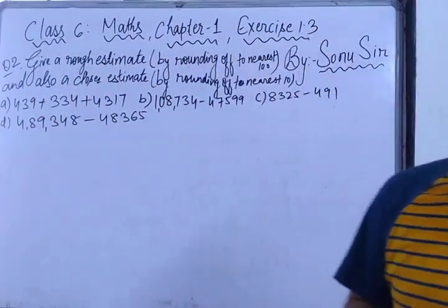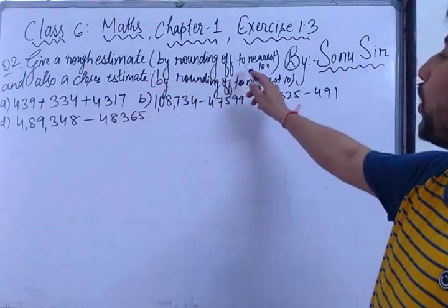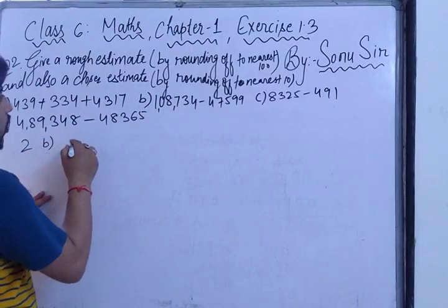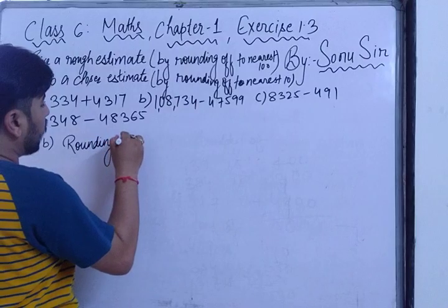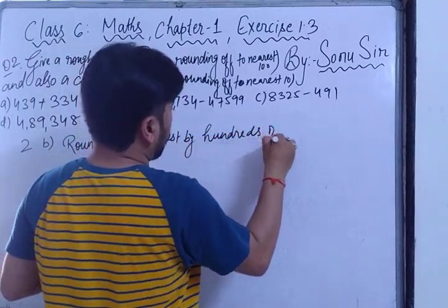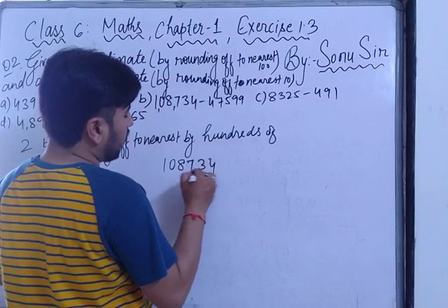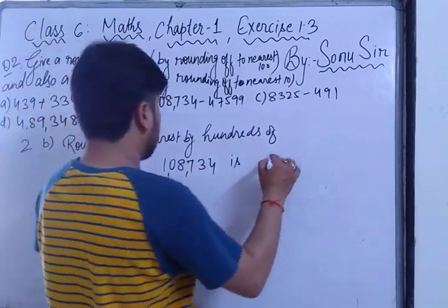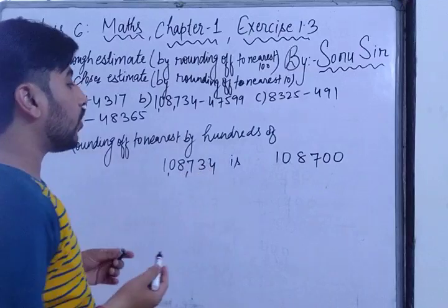Now let's solve question number (b). First, rounding off to nearest hundred of 108734 — here the last three digits are 734, the tens digit is 3 which is less than 5, so it will be 108700.